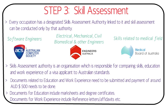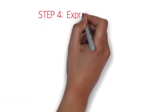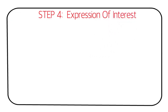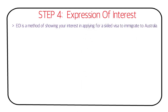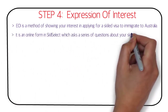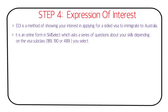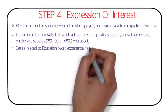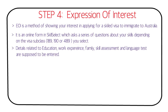Step four is the Expression of Interest (EOI). The EOI is a method of showing your interest in applying for a skilled visa to migrate to Australia. It is an online form in SkillSelect that asks a series of questions about your skills. There are three visa subclasses: visa 189, visa 190, and visa 489. You enter details related to education, work experience, family, skills assessment, and language test results.